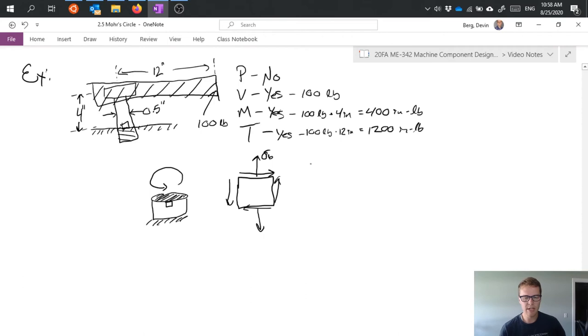Alright, so now I need to actually calculate what these values are. We have a basic equation M*y/I for bending stress and I can start plugging things in. I already calculated M up here so I have my 400 inch pounds. My y is my maximum distance from the neutral axis. Now in this case my neutral axis is going to pass right through the middle of my shaft. My shaft has a diameter of one half inch so that means I have a quarter inch maximum distance from that neutral axis to the outer surface.